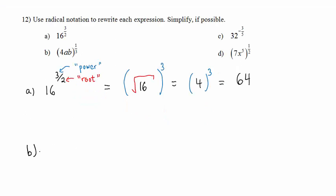Let's look at Part B. Here the root is the cube root. The power is 1. Anything to the 1 power, or first power, is itself. So we have simply 4AB under the cube root radical.